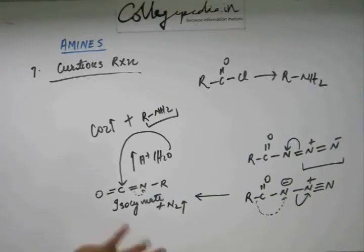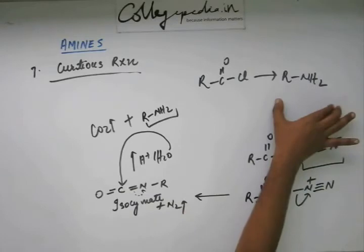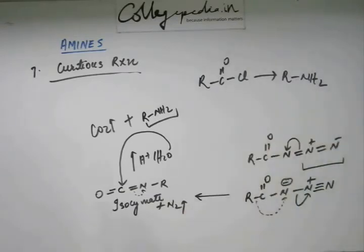Here we have acid catalyzed hydrolysis, but I'm assuming you people have grown up enough so that you'll cope up with this mechanism on your own. So the point is you started with acyl chloride and you are getting finally this amine. This you have to learn - this is Curtius reaction. What do you take in this?